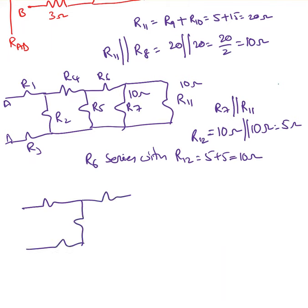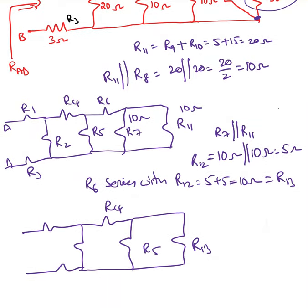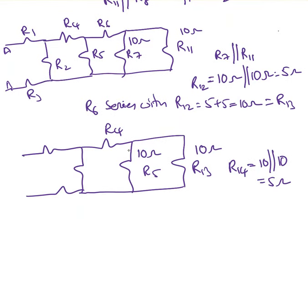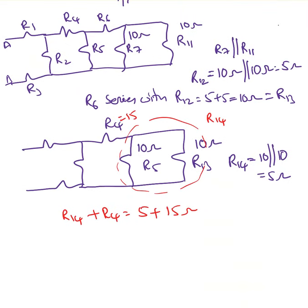In the next redraw: R13 = 10 ohms, R5 = 10 ohms. R5 is parallel with R13: 10 parallel with 10 = 5 ohms, which I call R14. Then R14 is in series with R4: 5 + 15 = 20 ohms. I'll label this R15 and redraw the circuit again.